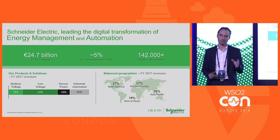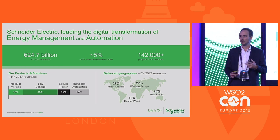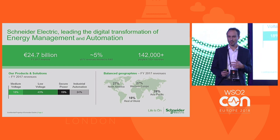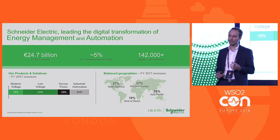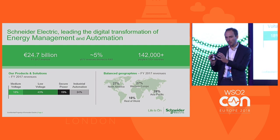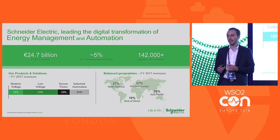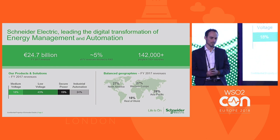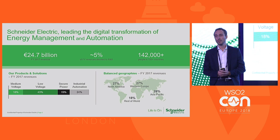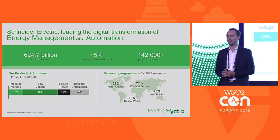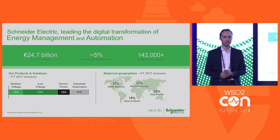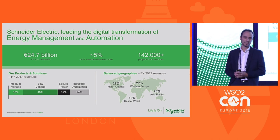We help our customers with three main things: we help them manage their efficiency better by optimizing their processes and the energy associated with it; we help them manage their energy supply better by integrating local production and managing energy sourcing; and we help them manage their grid better by digitizing it. R&D is key for us, and we invest 5% of our revenues into R&D, which is one of the highest in our sector.